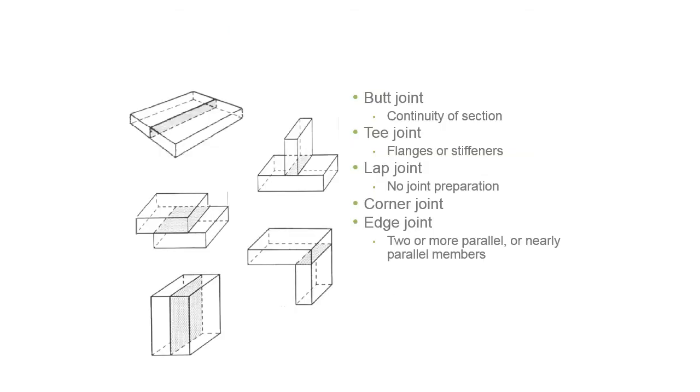Here you can see the basic joint types. Butt joint gives you a continuity of section. T joint is for flanges and stiffeners. A lap joint - nice thing about that is there's no joint penetration. We've got a corner joint, then you've got an edge joint - two or more parallel or nearly parallel members.